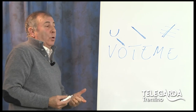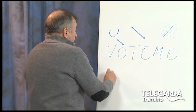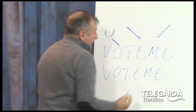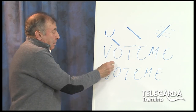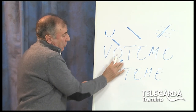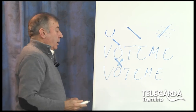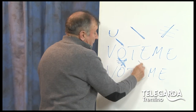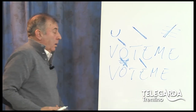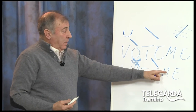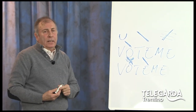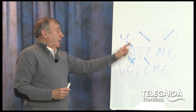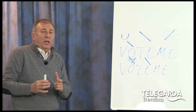Se invece mi rivolgo a un gruppo di amici e dico «voteme» — cioè votatemi — la parola rimane uguale ma cambia l'accento tonico, che non è più sulla O ma si sposta: voteme. Voi vedete la stessa parola che, cambiando il contesto della frase, cambia l'accento tonico, cioè cambia l'accento della voce.